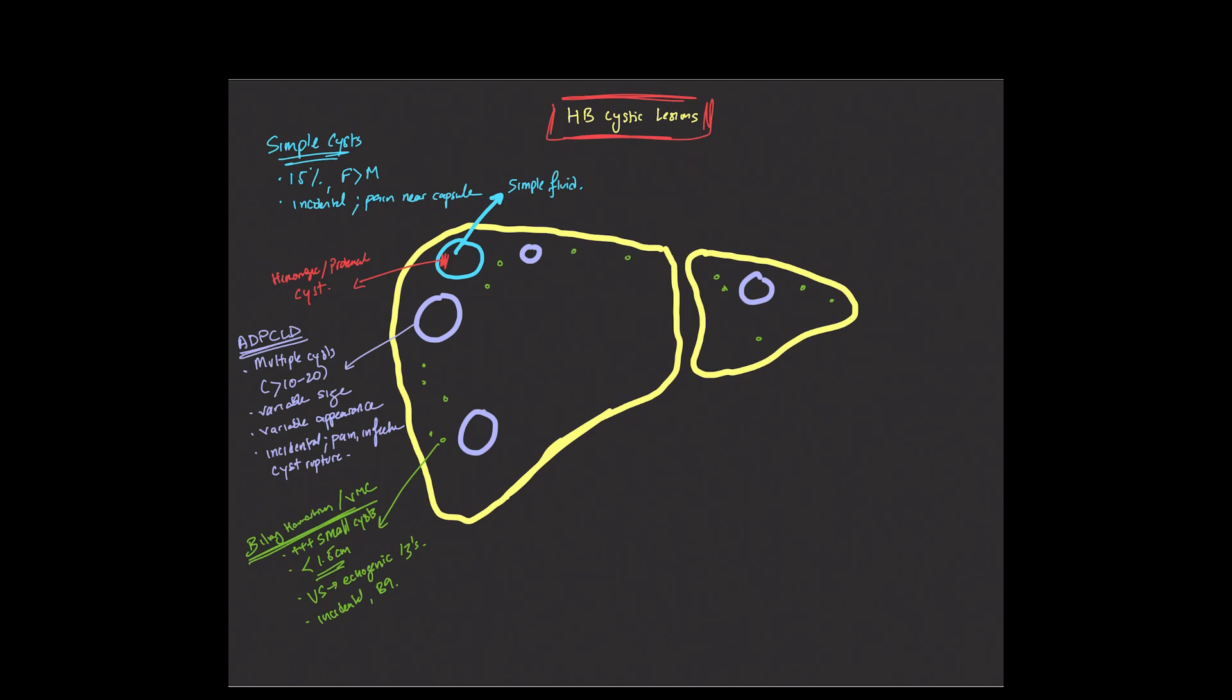For this next entity, I'm going to draw in the portal vein over here. As can be seen in this drawing, we're starting to see multiple small cysts that are on both sides of the portal vein. And they're somewhat clustered along the central portion of the liver.